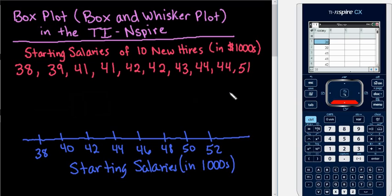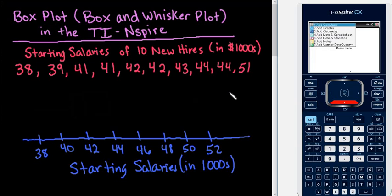After I have all of my data entered into this screen, what I'm going to do is I'm going to hit CTRL and I. And for this one, I'm going to add the data and statistics screen. So option 5, the data and statistics screen.